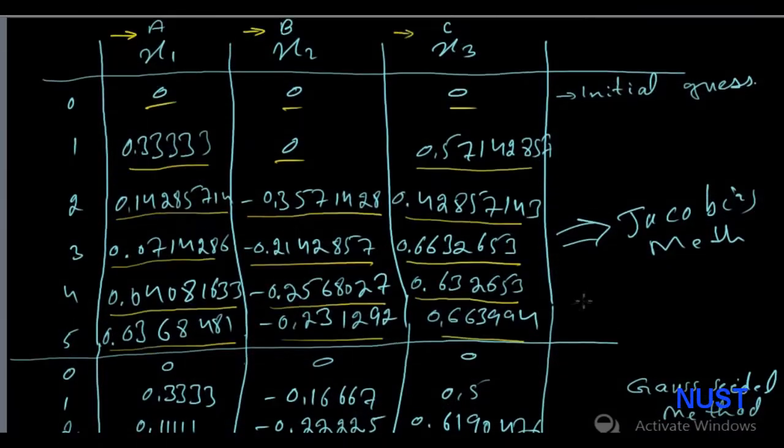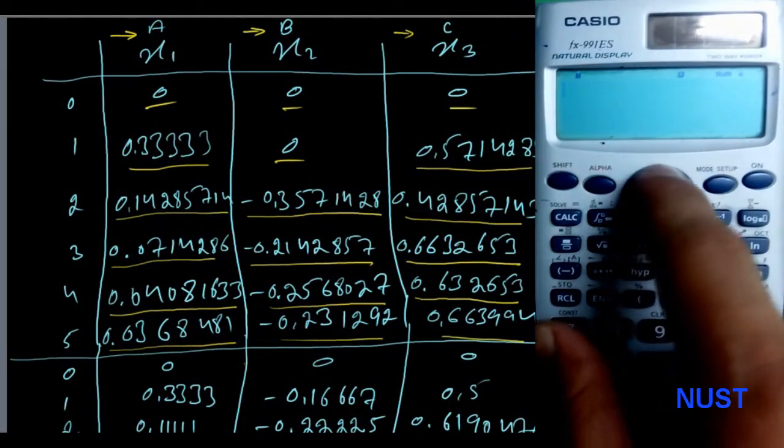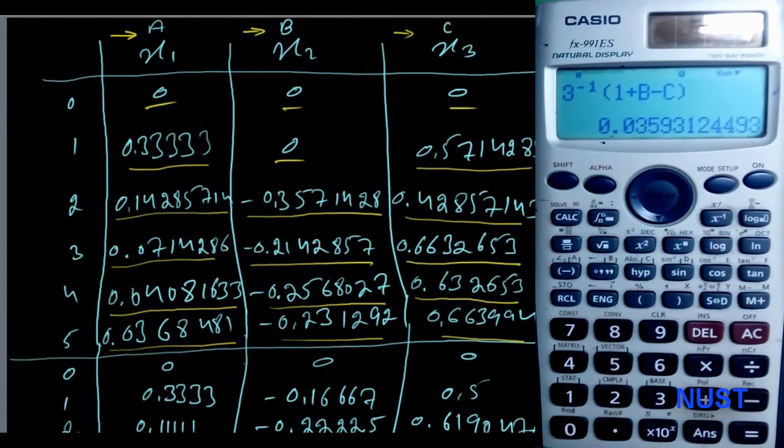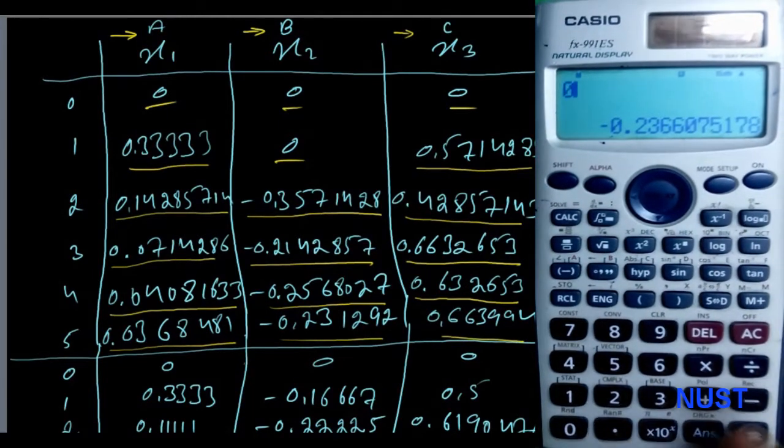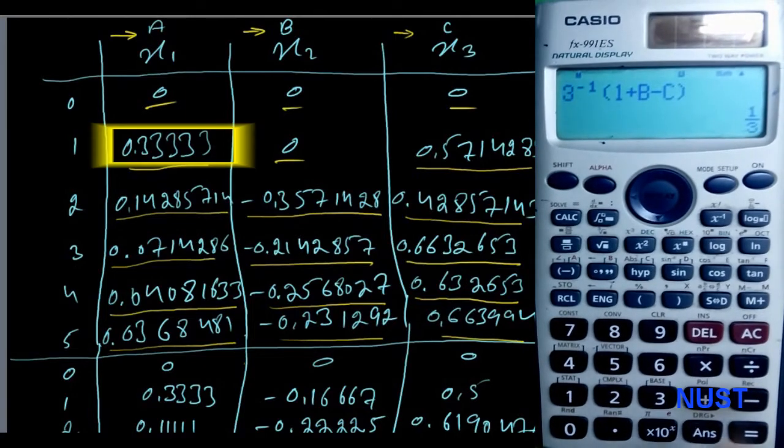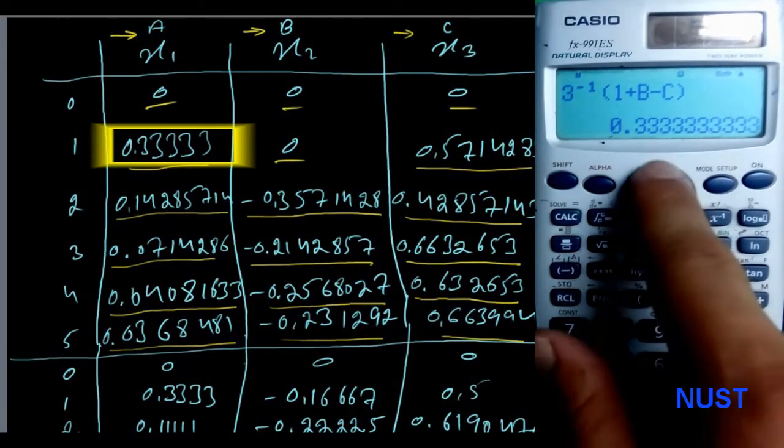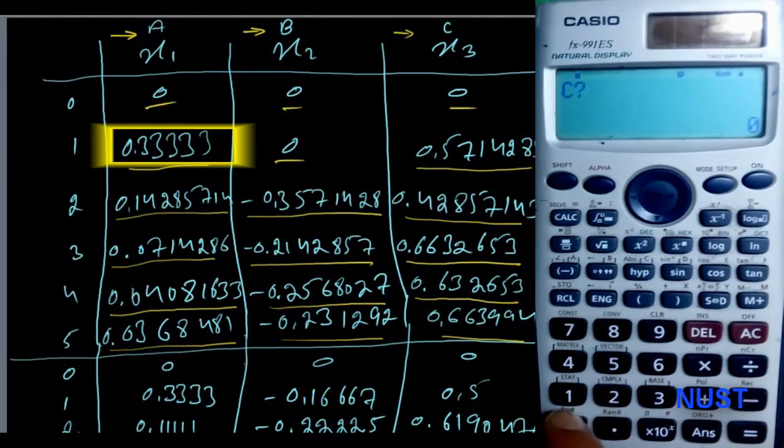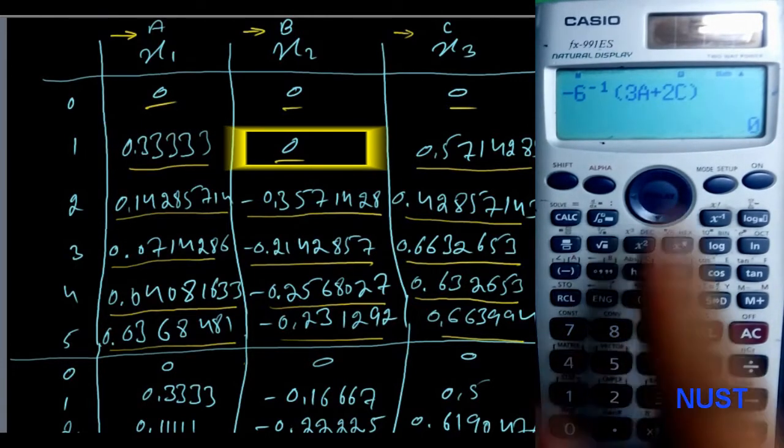After you typed all the equations, go to the equation for x1 and press solve button. Enter the initial guess values. Repeat for x2 and x3 with at least five iterations as shown.